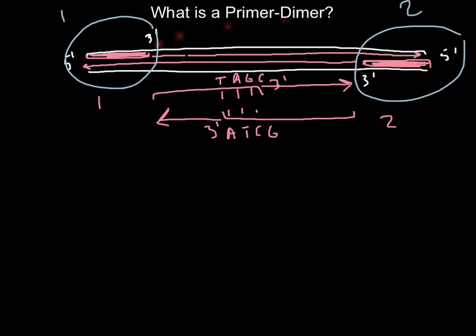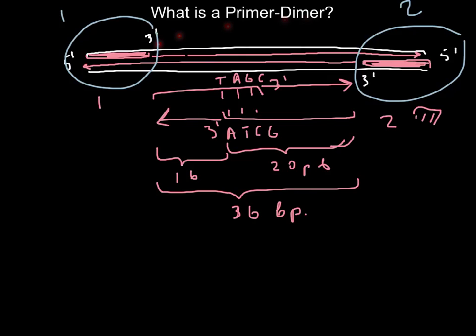Both primers would be extended. For example, if this fragment is 20 base pairs and four bases are complementary, so this fragment would be 16 base pairs. So total new strand of DNA would be 36 base pairs.